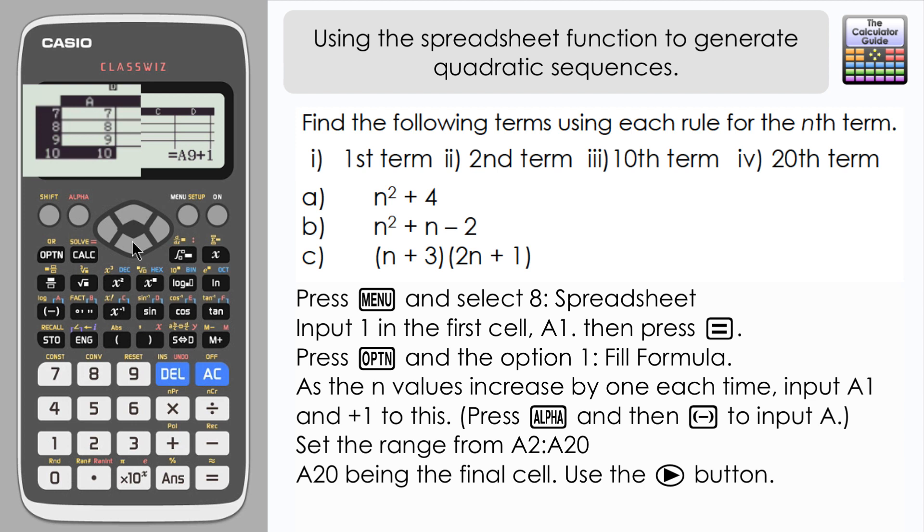Now I can see that the calculator has generated the n terms that we're going to use as a reference to generate three sequences here, and it should go all the way down to 20. And we can see here that the calculator displays the formula that was used in each of the cells.